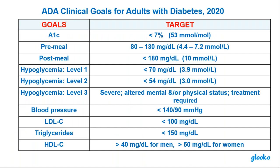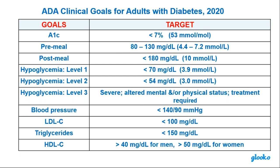Nutrition therapy is critical for meeting those targets. Here are the 2020 targets according to the American Diabetes Association: A1C less than 7, pre-meal 80 to 130, post-meal less than 180. Hypoglycemia starts at less than 70. Blood pressure less than 140 over 90. Then LDL, triglycerides, and HDL — you'll see these numbers again as we approach the nutrition therapy takeaway messages.